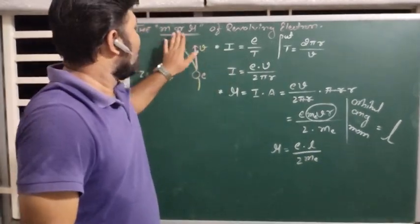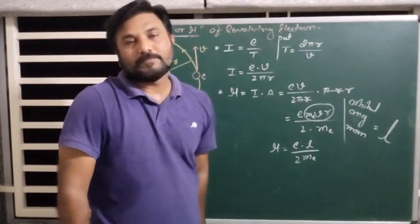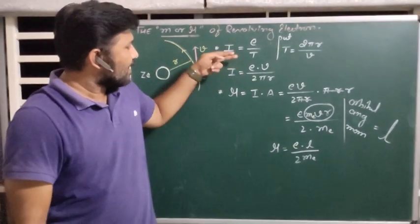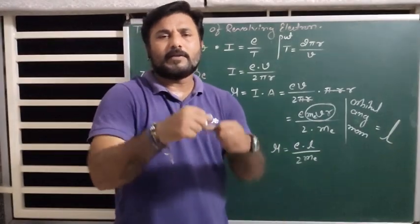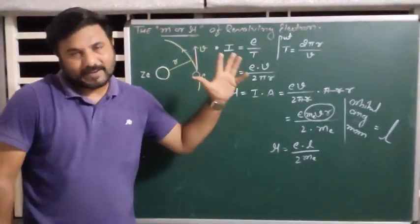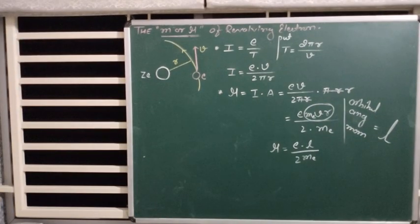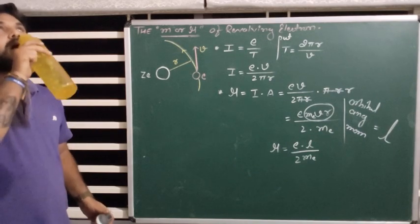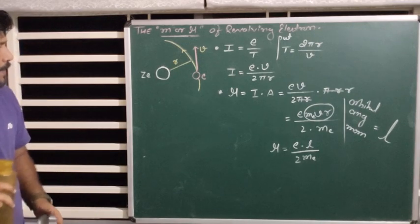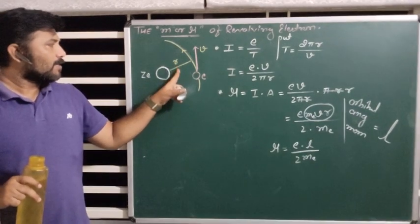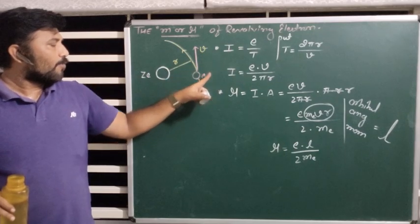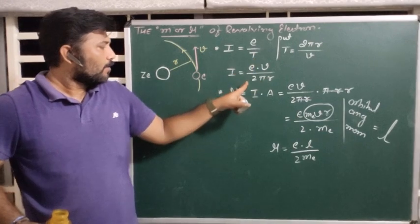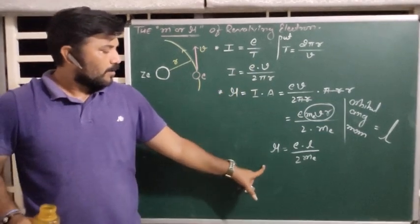This is the equation for the magnetic moment of the revolving electron. It is very easy — in four steps you will get the two marks. Electrons revolve around the nucleus with constant velocity V. Moving electrons produce electric current. Put the value of T, get equation 2, then directly get the magnetic moment.